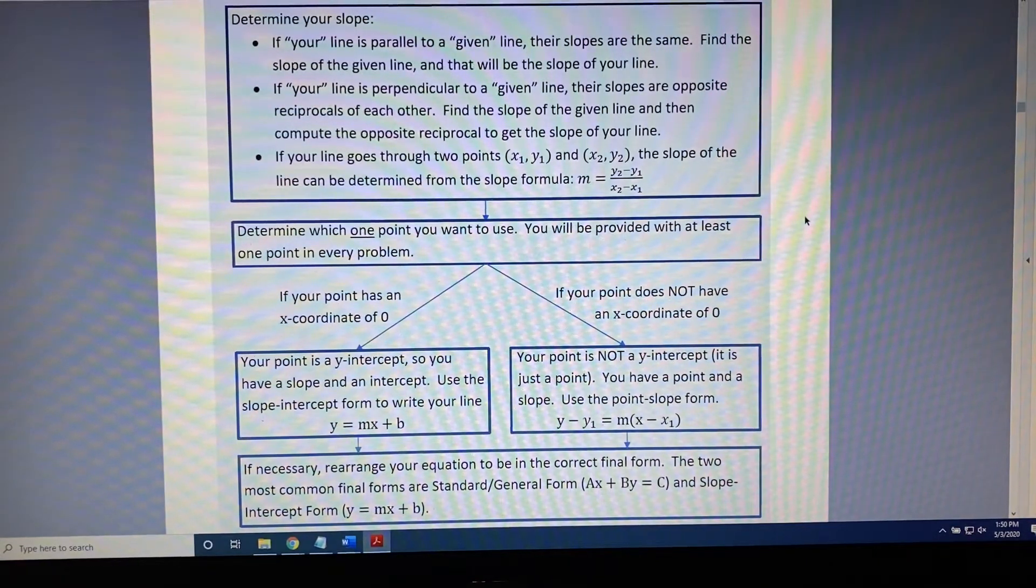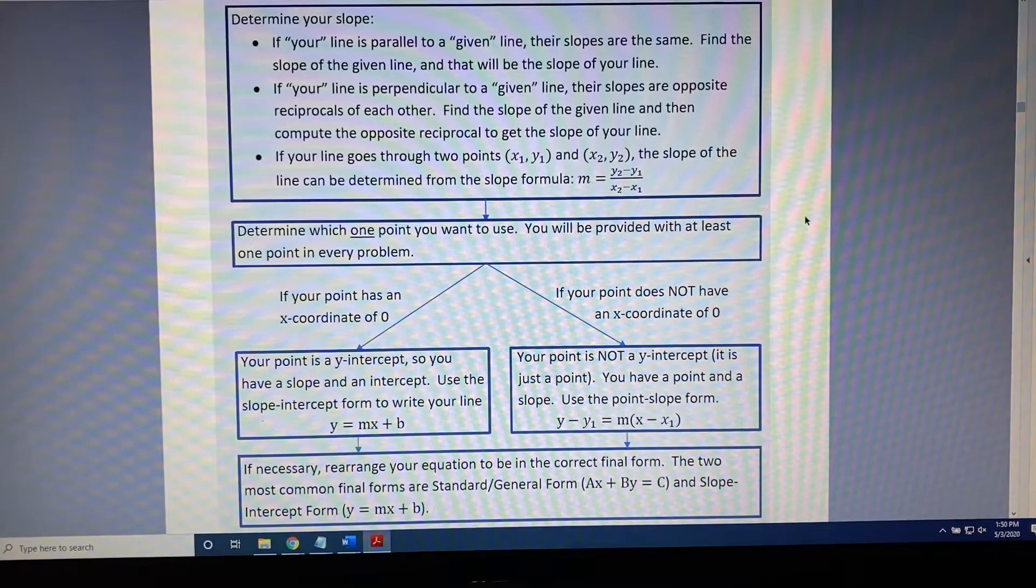Determine which one point you want to use. You will be provided with at least one point in every problem. So, if you're only given one point, then there's no decision to make. That's the point you must use. But, if you're given two, choose one.